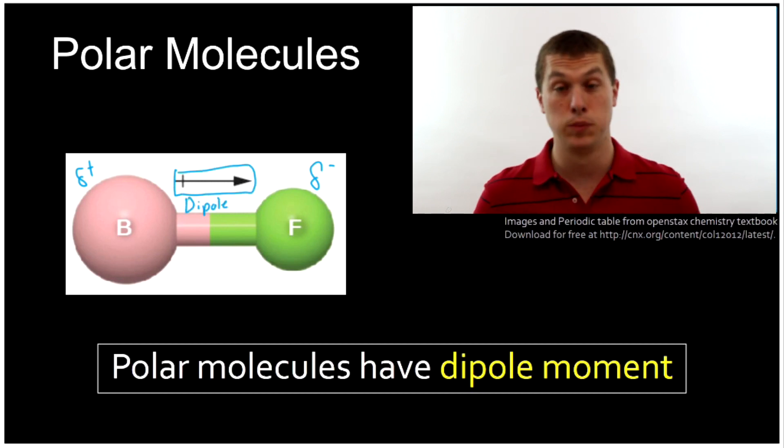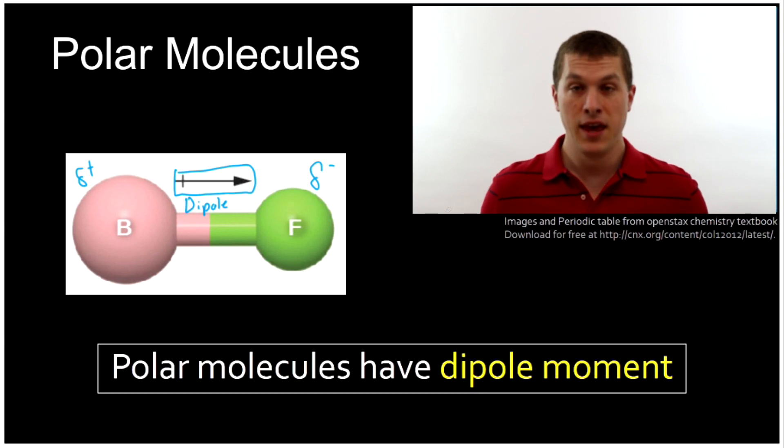We call it a dipole because there's two poles, a negative one and a positive one. And if a molecule has a net dipole moment, then it's polar. It requires a polar bond because a polar bond gives you the uneven distribution to begin with. So if you don't have polar bonds, you definitely don't have a polar molecule.